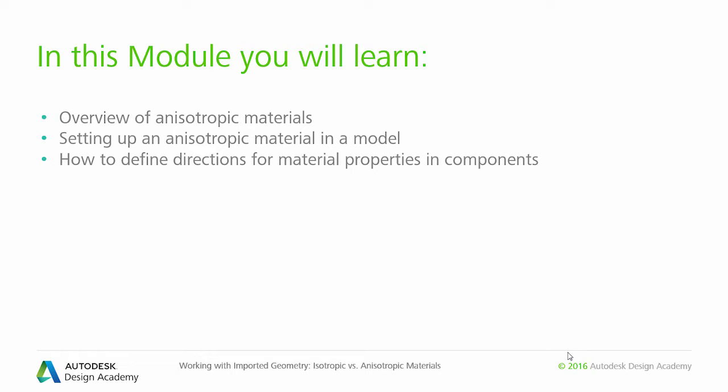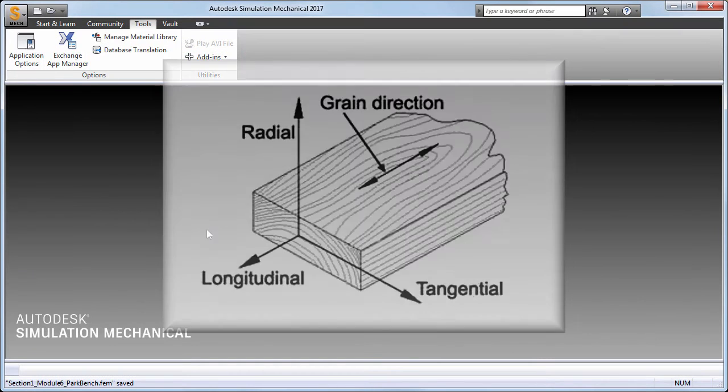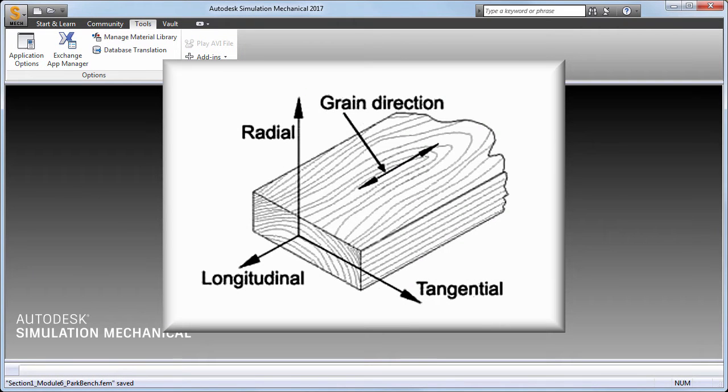Examples of anisotropic materials are wood, composites — both reinforced polymers and laminates — and materials with an organized crystalline structure, such as silicon. Wood is classified as an orthotropic material, which is a particular subtype of anisotropic materials.